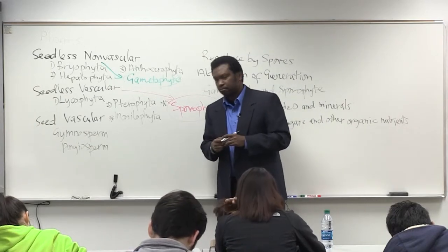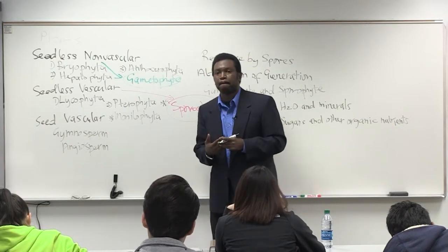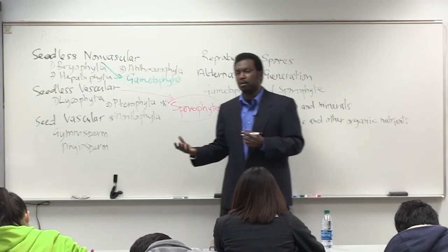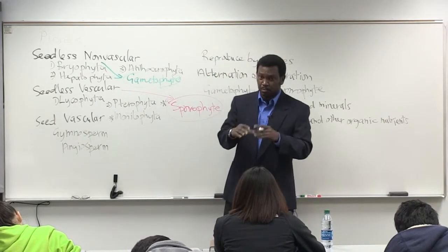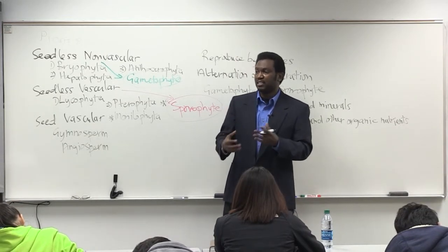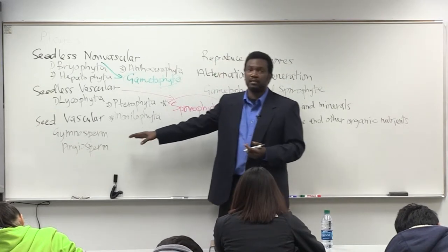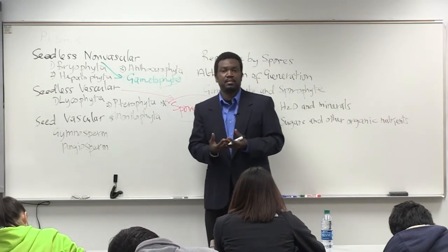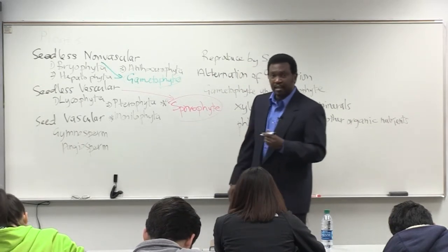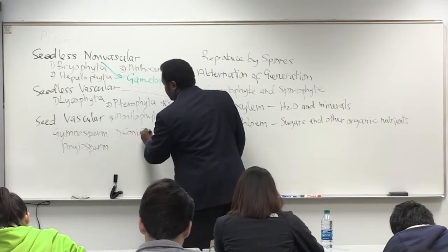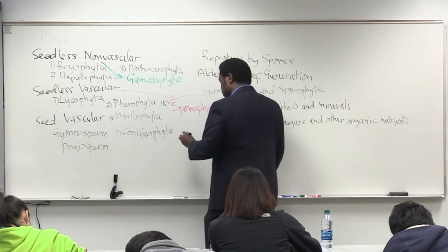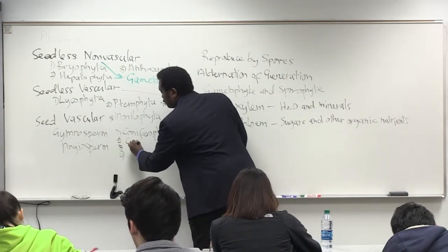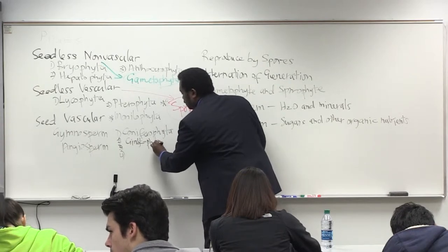Gymnosperms are referred to as the naked seed plants. There is no fruit covering the developing seed. Outside of the integuments, which become the seed coat, there is no extra tissue — no ovary developing into fruit as in angiosperms. The four phyla we look at are: Coniferophyta, Ginkgophyta, Cycadophyta, and Gnetophyta.